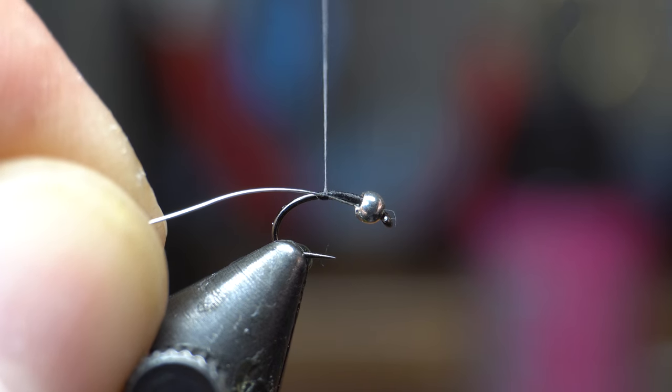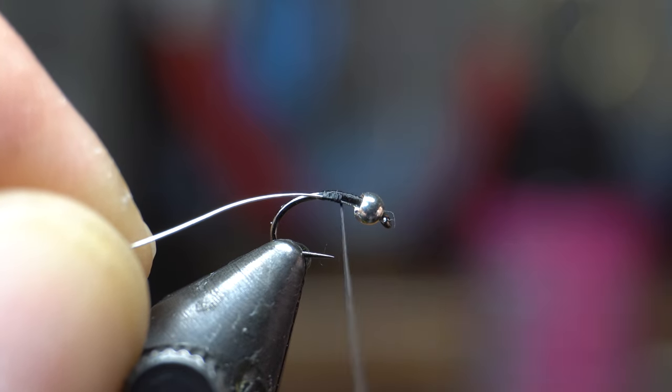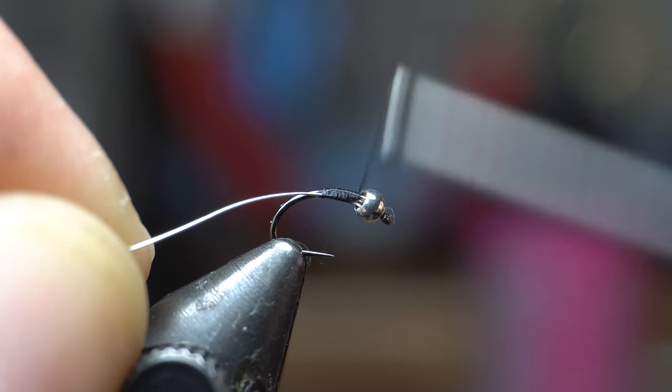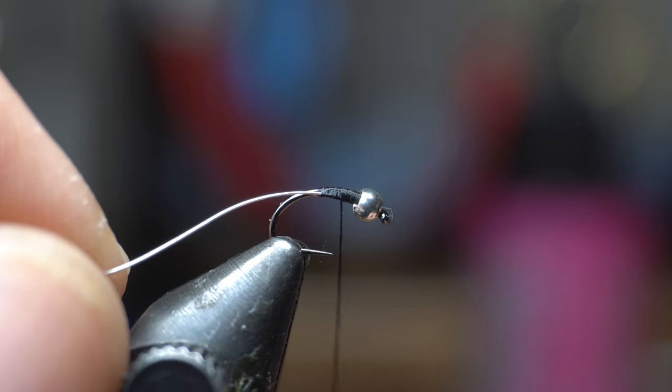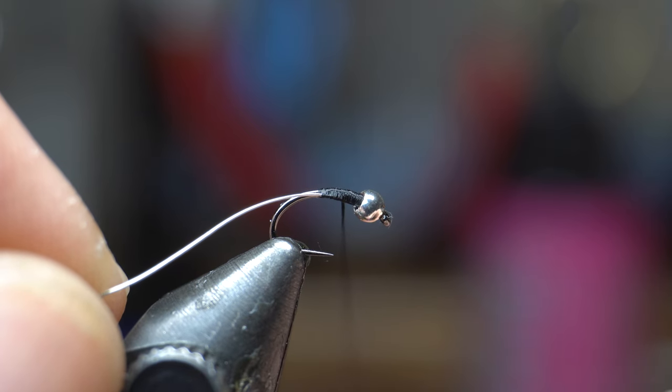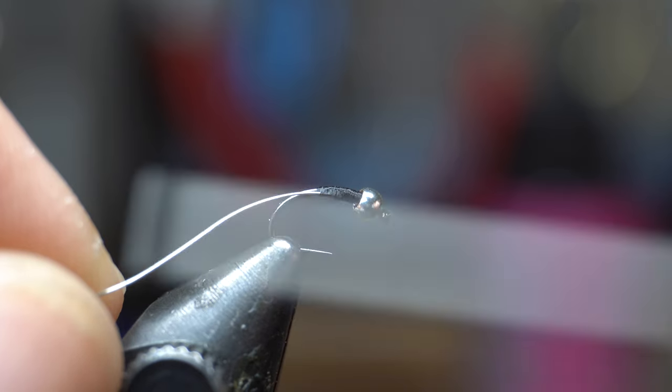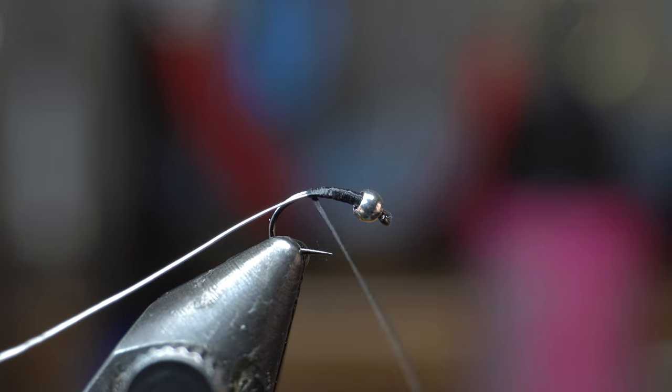So we're going to wind back up to the bead because again we're building a taper, a little different than last week. And then this is a flat thread, so I'm just going to flatten out my thread a little bit. It'll allow me to cover the hook a little easier with less wraps and less bulk.